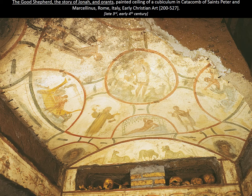Looking up at the ceiling, it's divided into different sections. In the very center, you have a circle with a figure of Christ as the Good Shepherd inside it, and then around the edges are all the story of Jonah. Part of how we are able to interpret this is because of that sculptural group we talked about before.